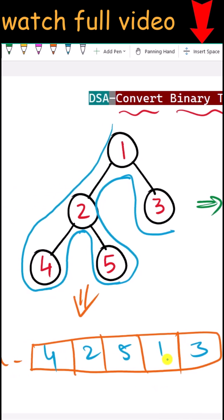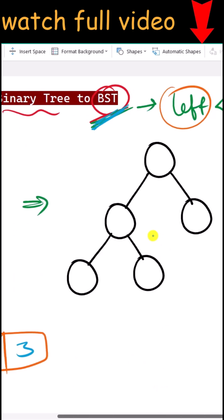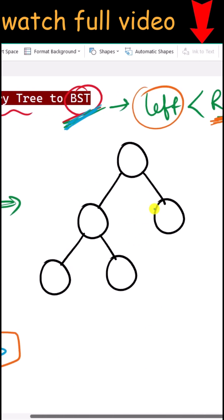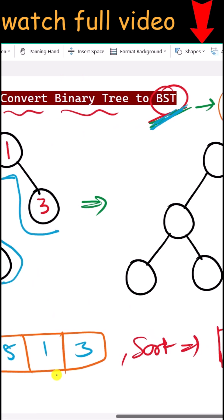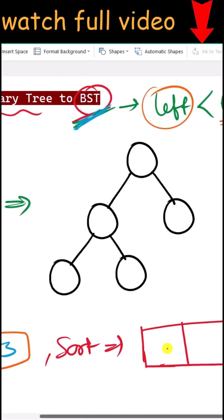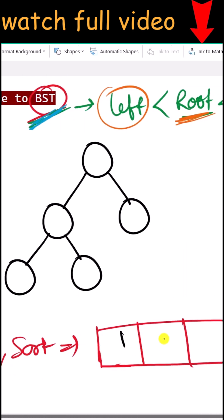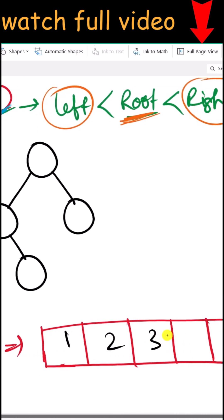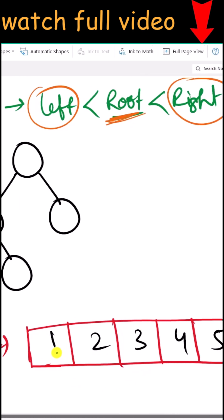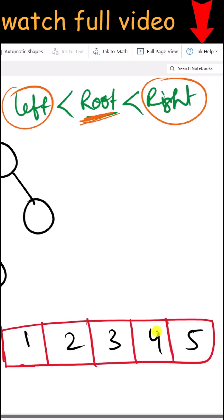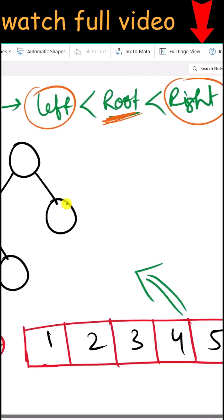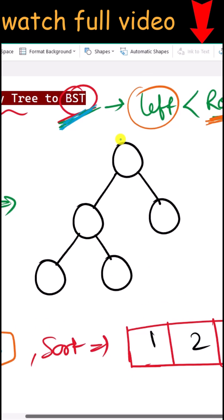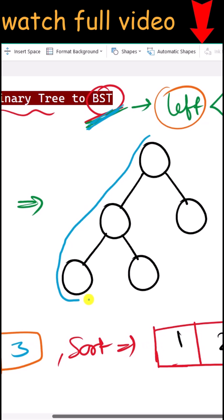Since we want to convert this to a binary search tree, we have to sort these values. After sorting, we get one, two, three, four, and five. Now we have to insert these sorted values back into our tree using in-order traversal again.